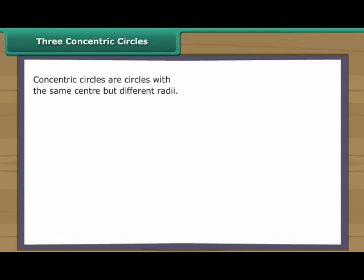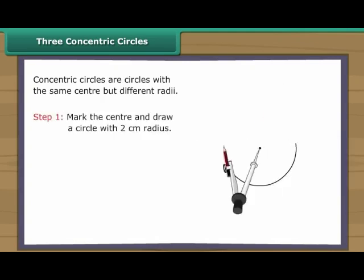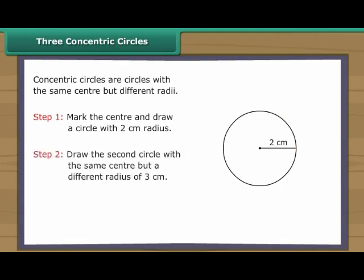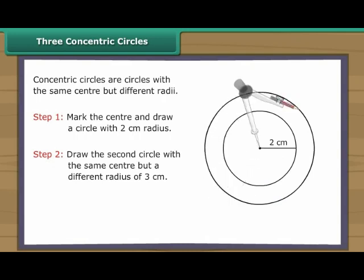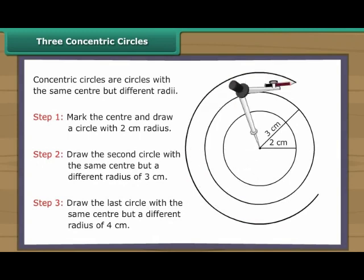Three concentric circles. Concentric circles are circles with the same centre but different radii. Let us now draw three concentric circles with the radii two, three, and four. Mark the centre and draw a circle with two centimetres radius. Draw the second circle with the same centre but a different radius of three centimetres. Draw the last circle again with the same centre but a different radius of four centimetres. We have three concentric circles.